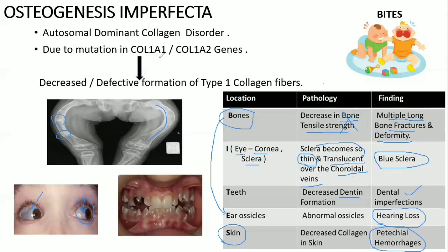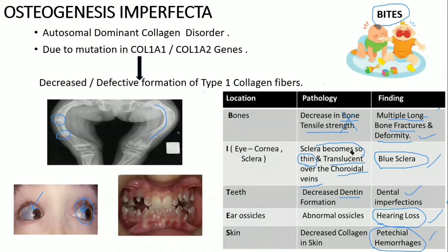In summary, osteogenesis imperfecta is an autosomal dominant collagen disorder with mutation in COL1A1 and COL1A2 genes, causing defective type 1 collagen. Remember the mnemonic BITES: B for bone — multiple long bone fractures and bone deformity; I for eye — blue sclera; T for teeth — dental imperfections; E for ear ossicles — hearing loss; S for skin — petechial hemorrhages.